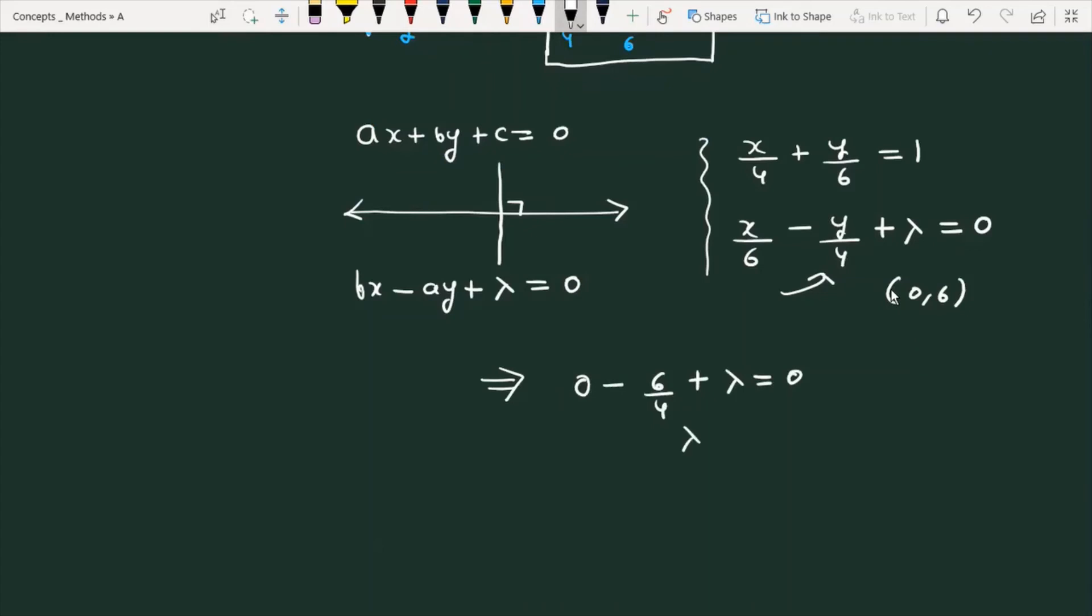You can write the value of lambda here, which is 3/2. When you substitute lambda = 3/2, the equation becomes x/6 - y/4 + 3/2 = 0.